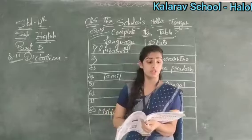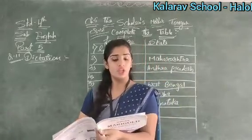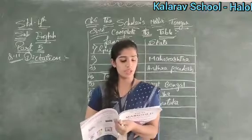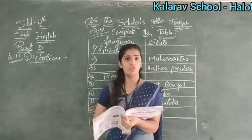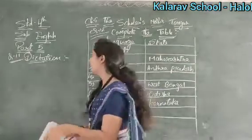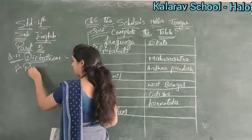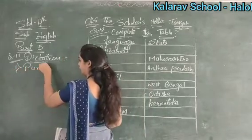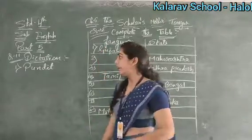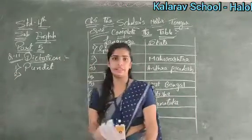Now see what is the first question. Question number 11 is dictation. So I will dictate and you will write the words. Your first word is given: Pandit. You will give the number and then write the dictation words, like this. In the next line you would write the next word.